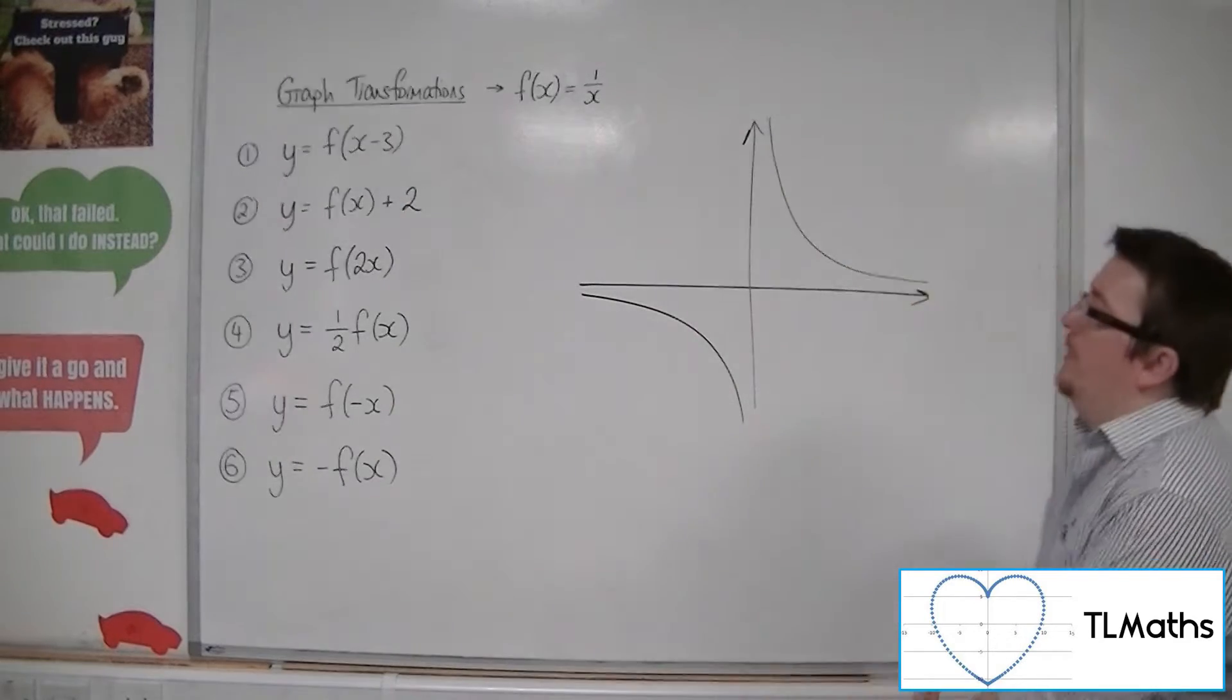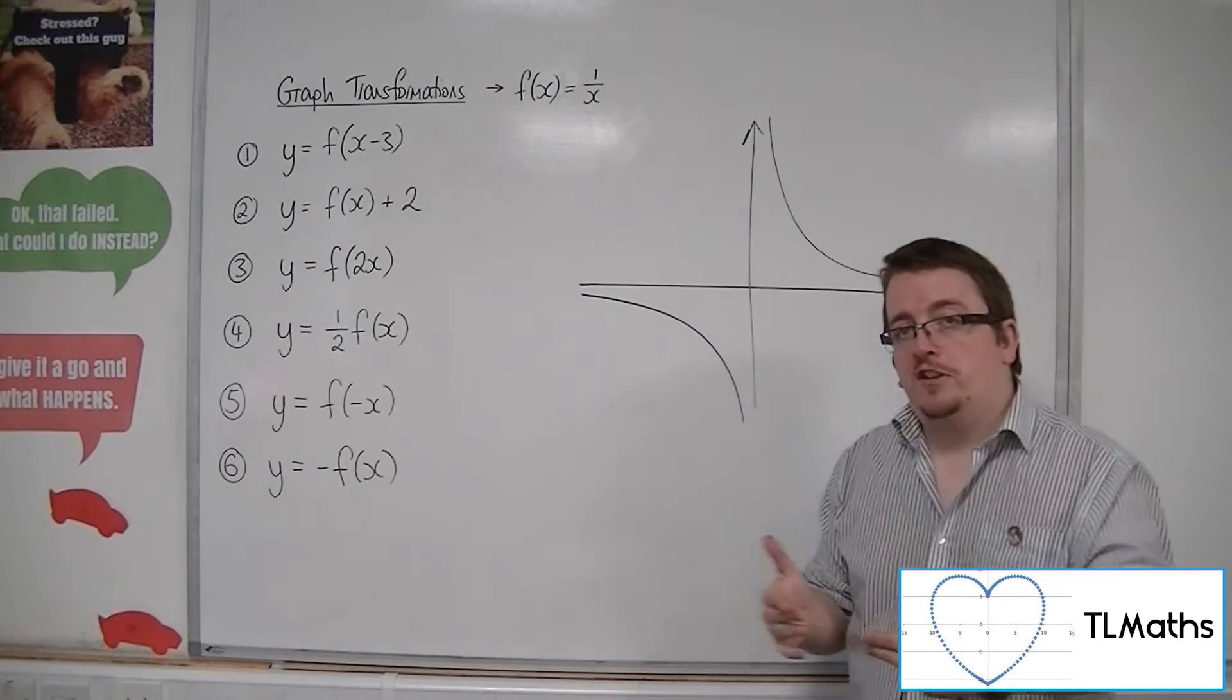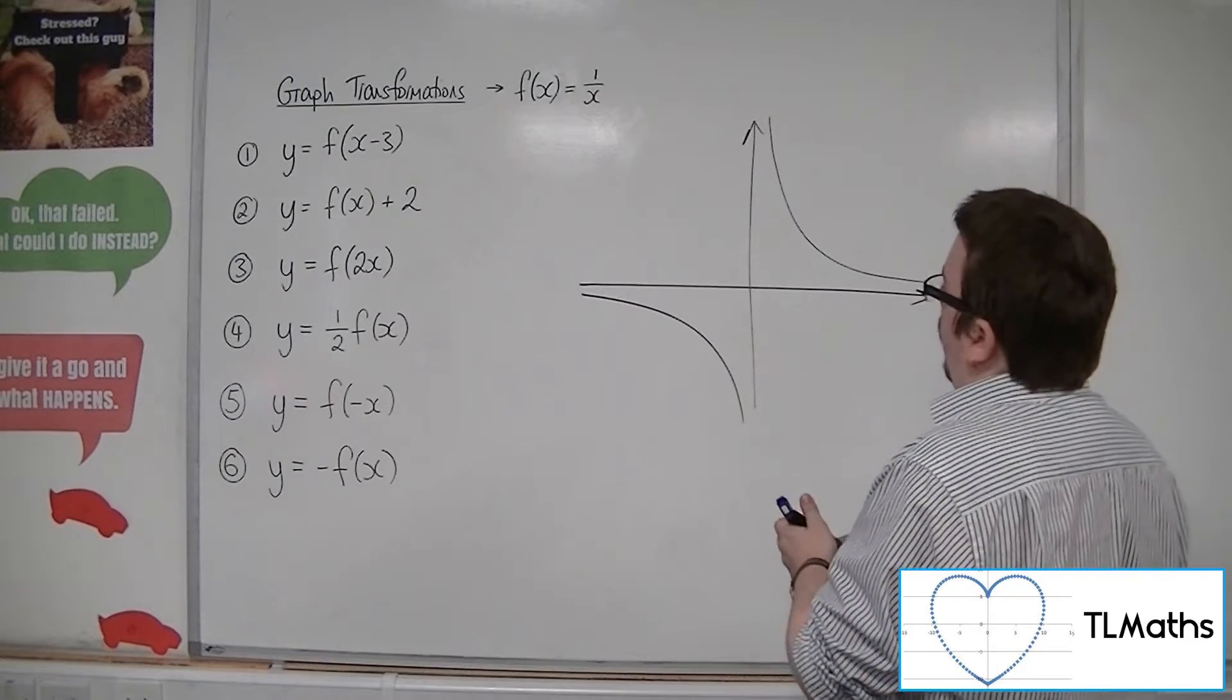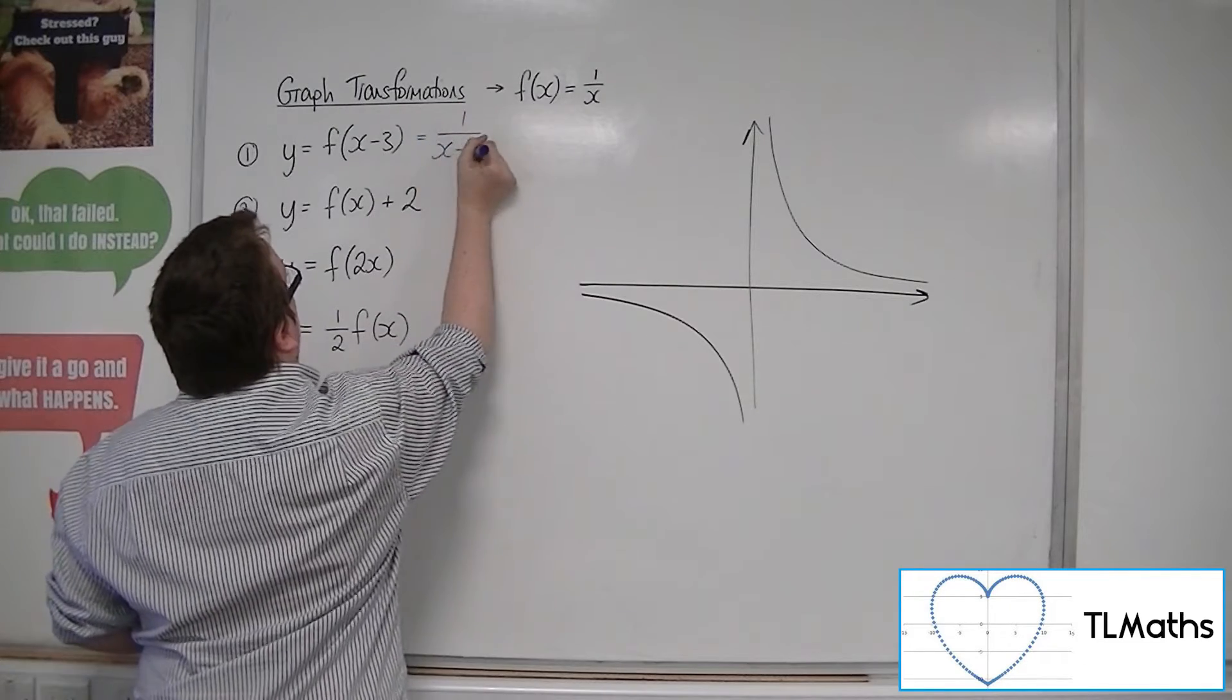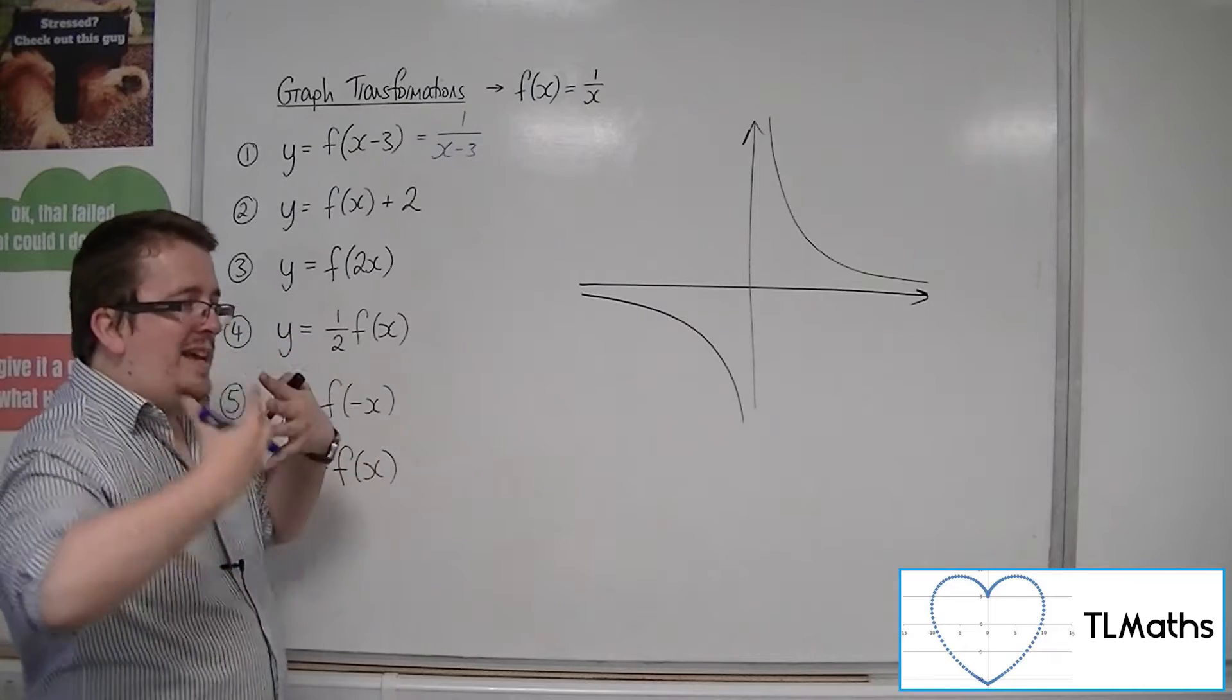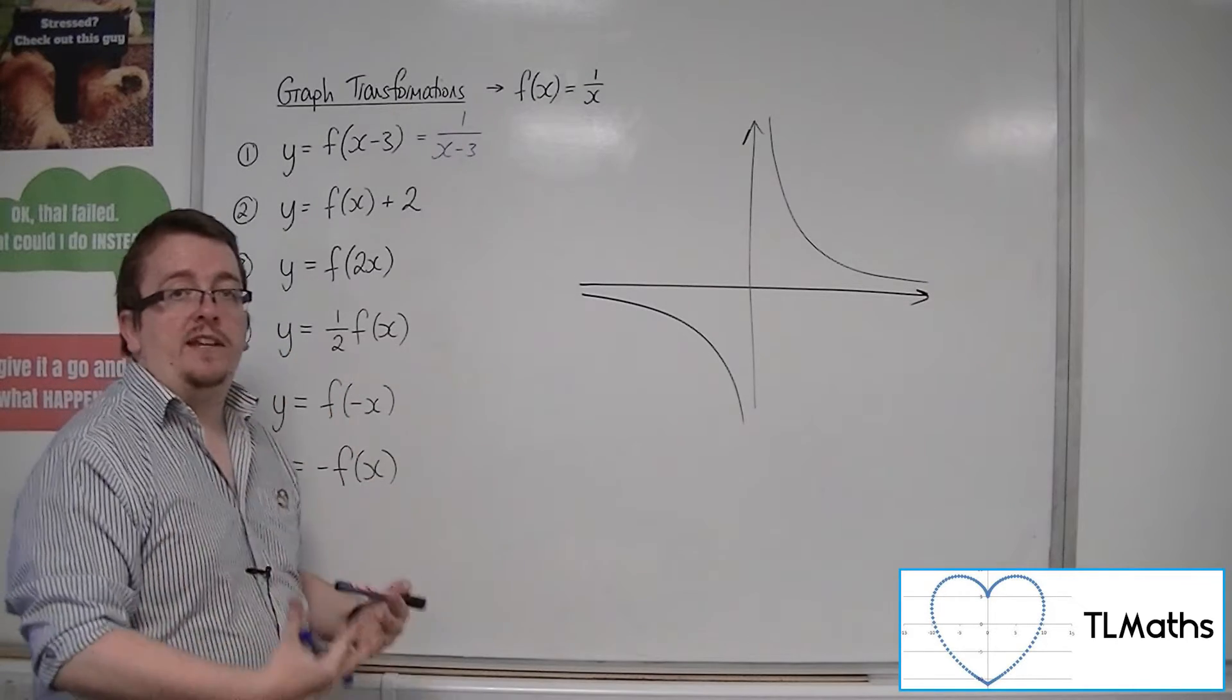If we look at f of x minus 3, that will translate the curve 3 units to the right. Now, what that does is if I replace the x with x minus 3, we have 1 over x minus 3. And what happens is that if you translate a curve, then all of its asymptotes get translated with it.